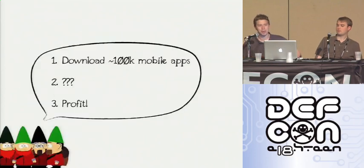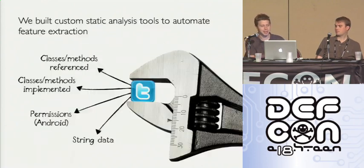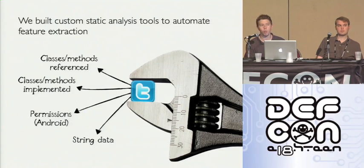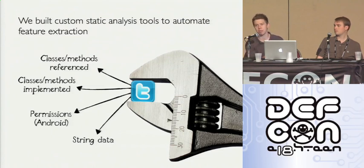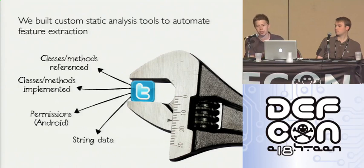Now that we have all this data, we built some automated analysis tools and started extracting data to figure out what we're doing here. Generally speaking, we're looking at what APIs and framework constructs on a given platform an app references, what things are implemented inside the application, what permissions are in the app on Android, and sometimes we can extract strings if we're looking for specific things.